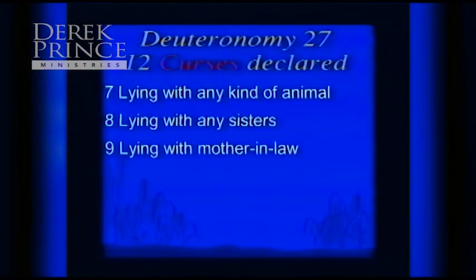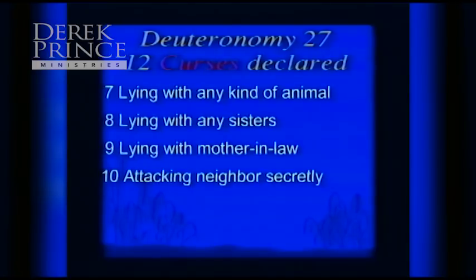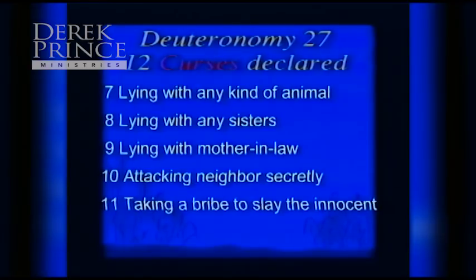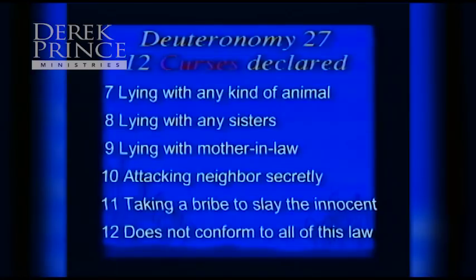Verse 22: 'Cursed is the one who lies with his mother-in-law.' Verse 24: 'Cursed is the one who attacks his neighbor secretly.' Verse 25: 'Cursed is the one who takes a bribe to slay an innocent person.' And if those 11 sources don't get you, verse 26: 'Cursed is the one who does not conform to all the words of this law.' In the Old Testament economy, perfect obedience to the law was required — even though it was impossible — so we would understand that God's standards are way up here. God never grades on a curve. There are a total of 18 sources and they will be covered as we go.